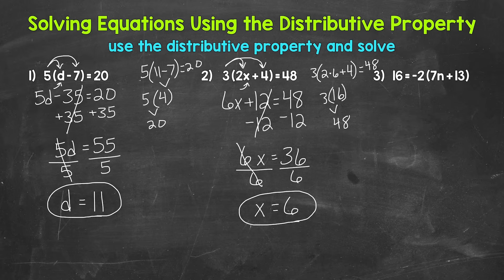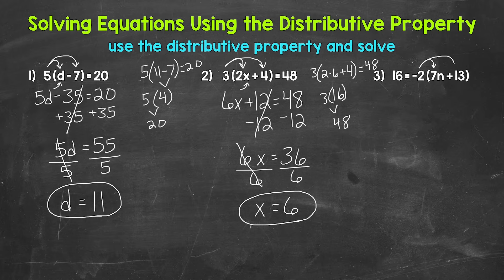Lastly, let's move on to number 3, where we have 16 equals negative 2 times (7n plus 13). Let's use the distributive property here. We distribute negative 2 to 7n and 13. Negative 2 times 7n gives us negative 14n, and negative 2 times 13 gives us negative 26.